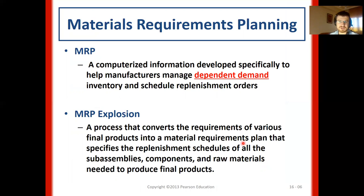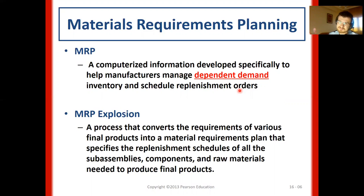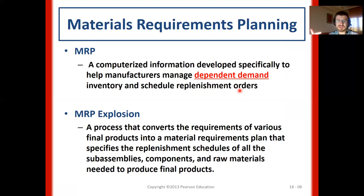MRP is a computerized information system developed specifically to help manufacturers manage dependent demand inventory and schedule replenishment orders. It is about controlling or planning how many dependent and independent items should be planned to meet our customer orders. We will use a master production schedule for independent items, then using bill of material we will explode MRP and calculate how much is needed. This process is called MRP explosion.